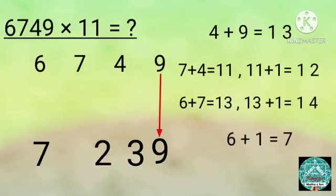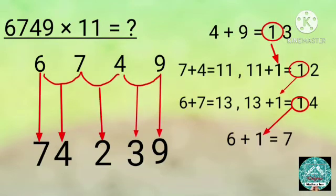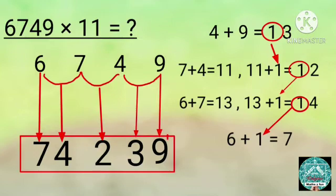Multiply 6,749 by 11. We'll write the answer from the right side. From the right side, write the last digit of the number, that is 9.